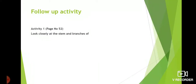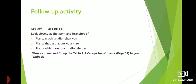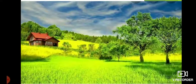Look closely at the stem and branches of plants much smaller than you, plants that are about your size, and plants which are much taller than you. Observe them and fill up table 7.1, Categories of Plants, on page number 53 in your textbook. Three examples of plants are already given, and three columns are vacant — fill those by observing any three plants in your area. Thank you, have a nice day.